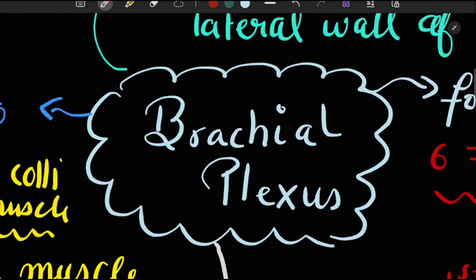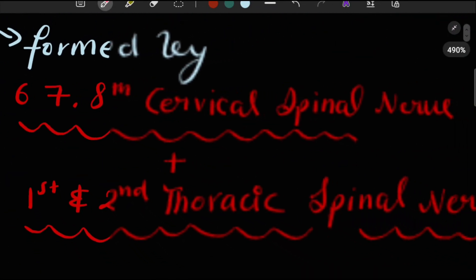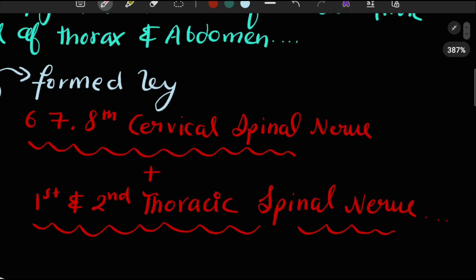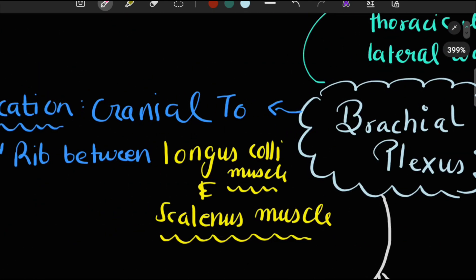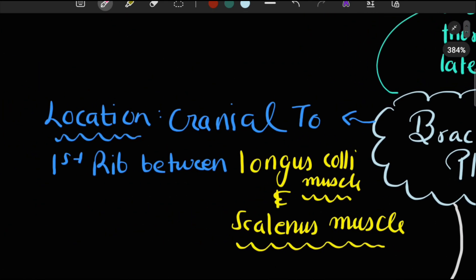The brachial plexus is a network of nerves formed by the sixth, seventh, and eighth cervical spinal nerves and the first and second thoracic spinal nerves. In terms of location, it is located cranial to the first rib.